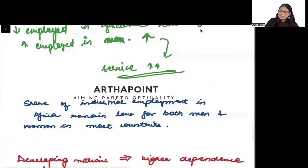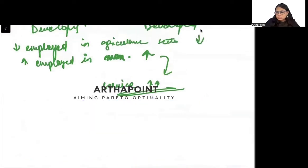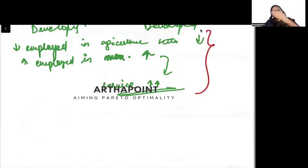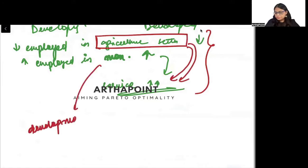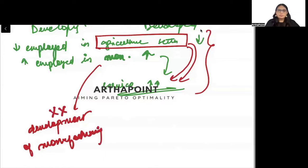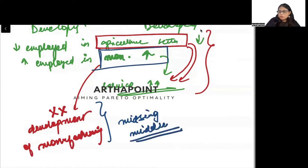The usual process is: first develop agriculture, then increase manufacturing, and then grow the service sector. But in India, what has been seen is that there was a direct movement from the agricultural sector to the service sector without the development of manufacturing. This came to be known as the problem of the missing middle.